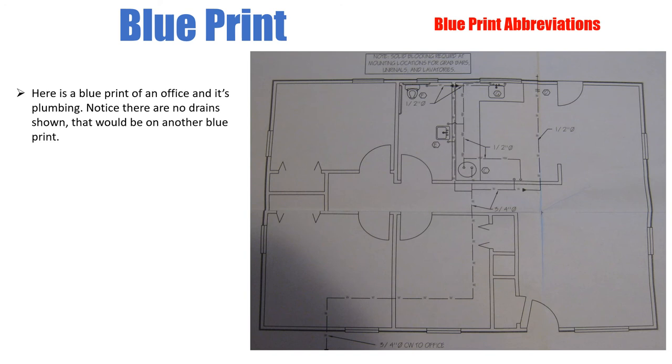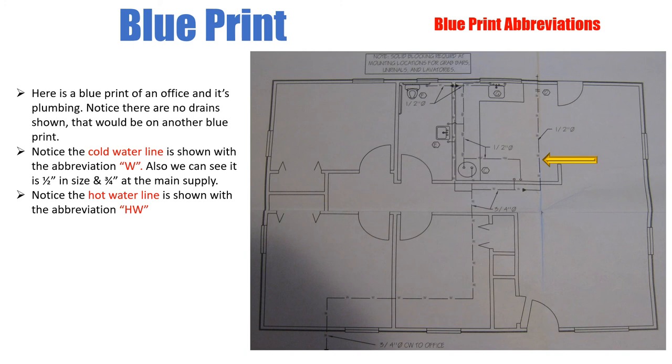Okay, so here's a blueprint of an office and it's plumbing. Notice there's no drain line shown, so that would be on a separate blueprint. Notice here the cold water line is shown with the abbreviation W. Also we can see it is half an inch in size and three quarters at the main supply. So here's our main supply coming in, it's labeled three quarter inch. Cold water to the office comes in through here, stops there. So this is all three quarter inch plumbing, and the half inch lines are shown here. And we have a half inch line here also.